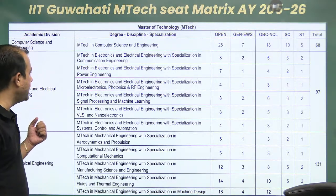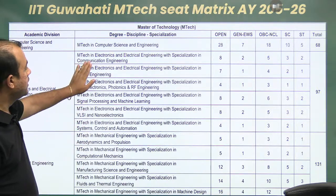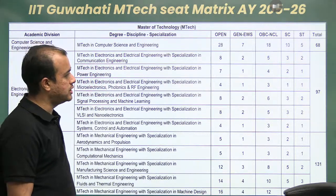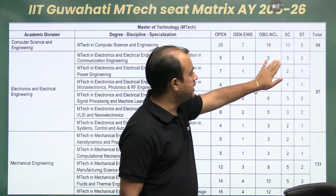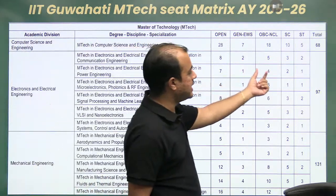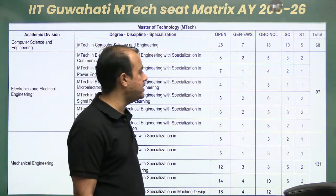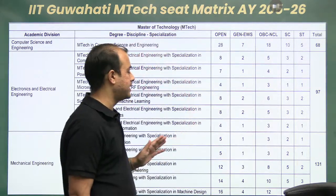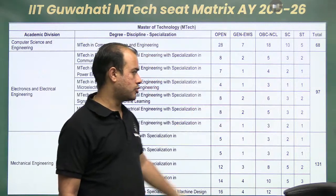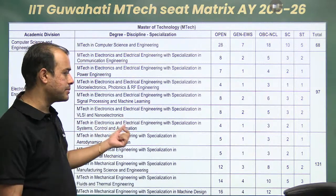Now in detail about the branches — MTech in Electronics and Electrical Engineering with specialization in Communication has 20 seats. Power Engineering has 15 seats. Microelectronics, Photonics and RF Engineering has 10 seats. Signal Processing and Machine Learning has 21 seats.